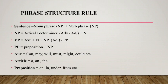Auxiliary words include: can, may, will, must, could. These are auxiliary words. Articles that we know include: a, an, and the. Prepositions that we know include: on, in, under, from — these are prepositions. Phrase structure rules help to make a tree diagram structure.